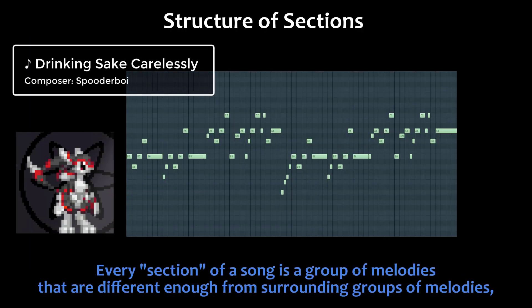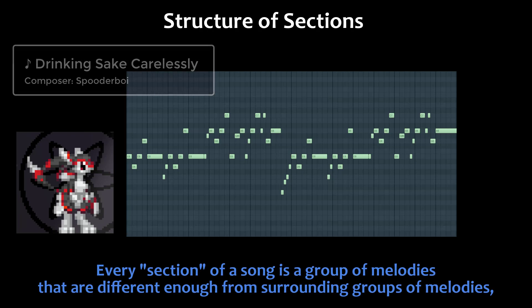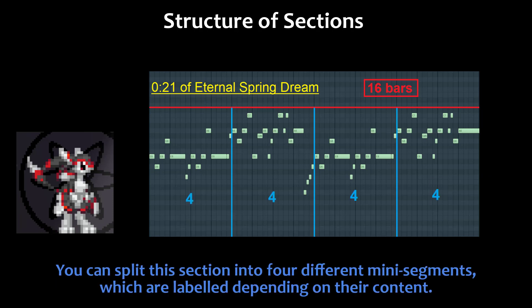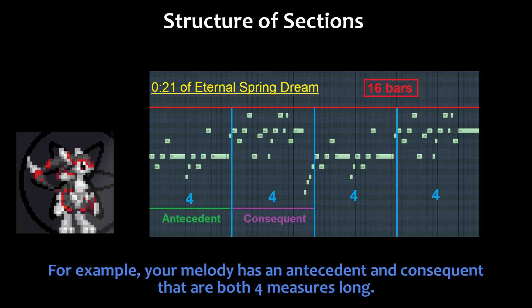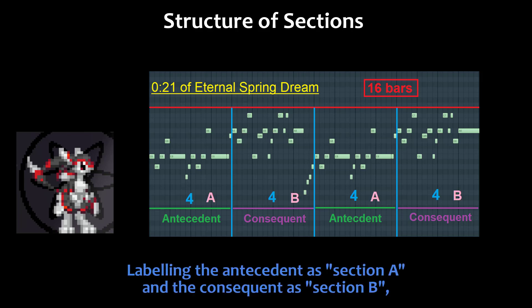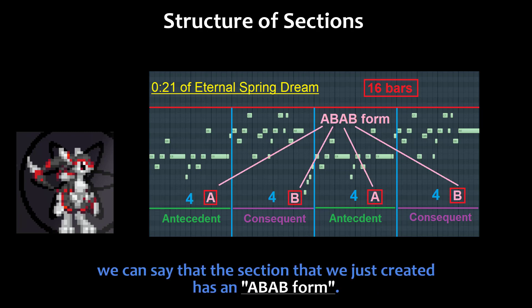Every section of a song is a group of melodies that are different enough from surrounding groups of melodies, in that the listener senses that the song has moved somewhere. Suppose your section is 16 measures long. You can split this section into 4 different mini-segments. For example, your melody has an antecedent and consequent that are both 4 measures long, making the melody 8 measures long in total. We can repeat this melody to fill in the 16-measure section. Labeling the antecedent as section A and consequent as section B, we can say this section has an ABAB form.